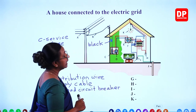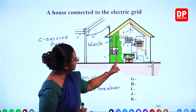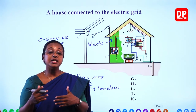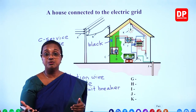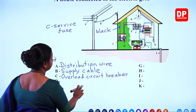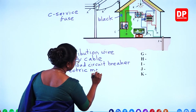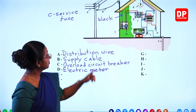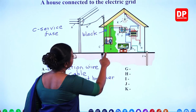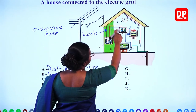Both wires are connected to component D, which is the electric meter or electricity meter. The service provider needs a record of the electricity consumed by the household, and that is done by the electric meter. It keeps track of the amount of electric energy consumed by the household.